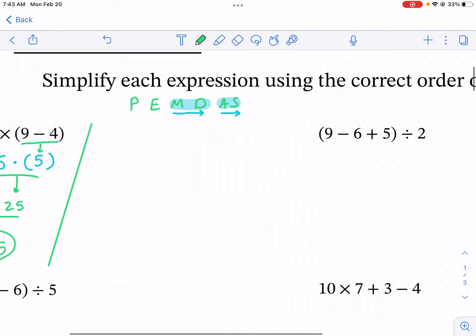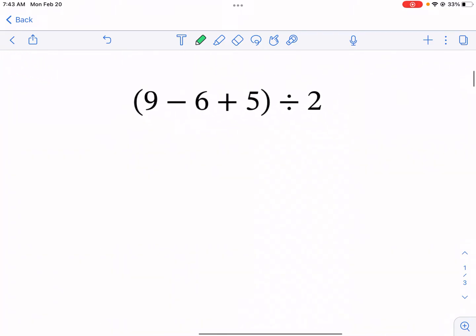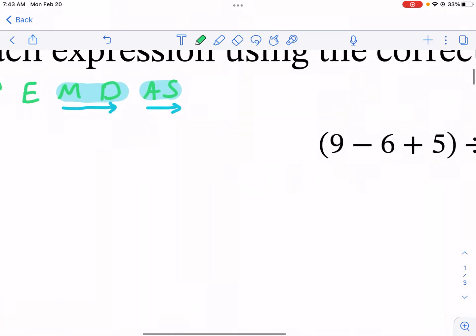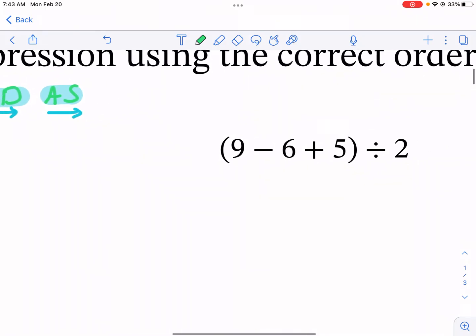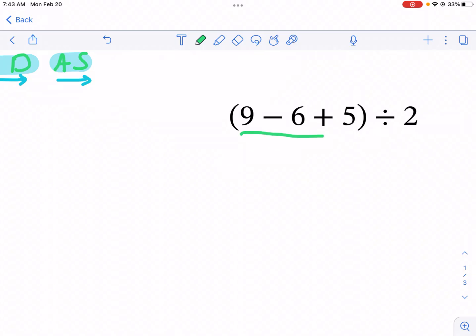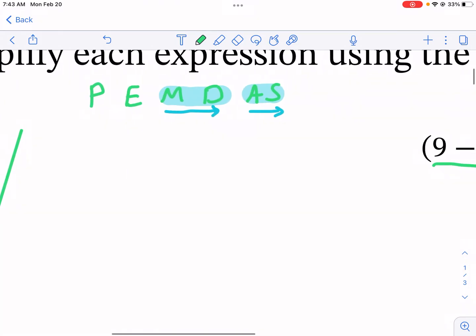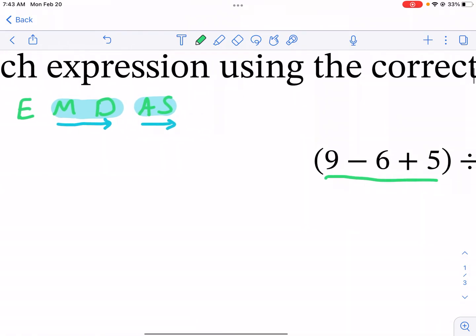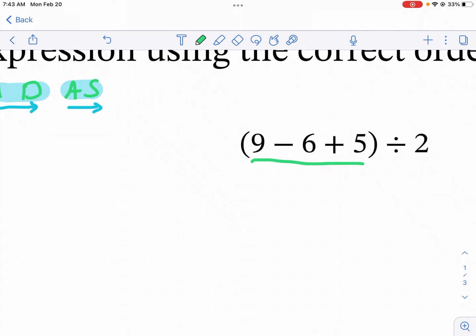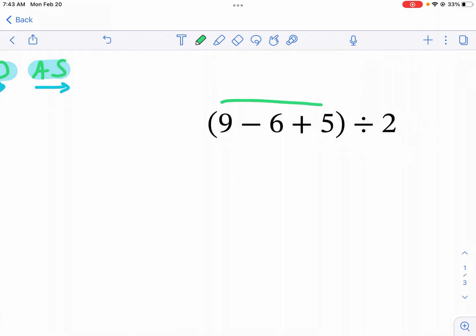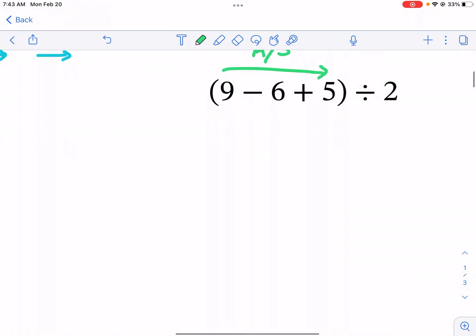So let's go ahead and move on to number two. Right here we can see that we have parentheses, we do not have exponents, and we have division. So let's start with the parentheses. Now in the parentheses we restart order of operations. We don't have more parentheses or exponents or multiplication, but we do have addition and subtraction. Don't fall into the trap of needing to do addition before subtraction—you're gonna get some wrong answers that way. We need to do just left to right inside this parentheses.